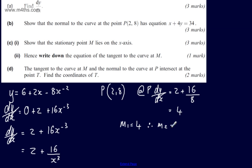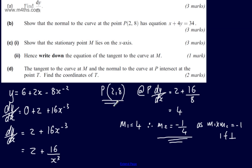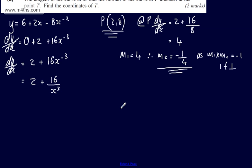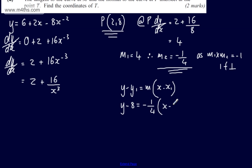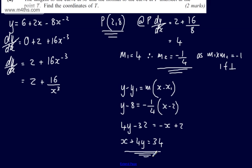Therefore M2, the gradient of the normal, is the negative reciprocal, which is −1/4, since M1 × M2 = −1 for perpendicular lines. I've got a gradient and a point, so I substitute into y − y1 = m(x − x1): y − 8 = −1/4 × (x − 2). Multiplying both sides by 4: 4y − 32 = −x + 2. Adding x to both sides and adding 32: x + 4y = 34, as required.